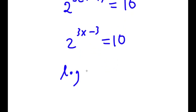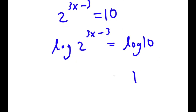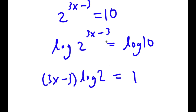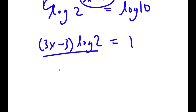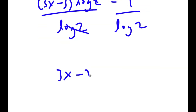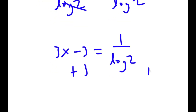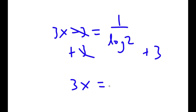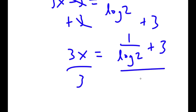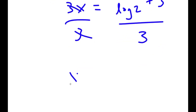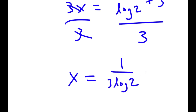Taking the log on both sides, I get log of 2 to the power of (3x minus 3) equals log 10, which is 1. Moving the exponent to the front: 1 equals (3x minus 3) times log 2. Dividing both sides by log 2, I get 3x minus 3 equals 1 over log 2. Adding 3 to both sides and dividing by 3, x equals 1 over (3 log 2) plus 1.